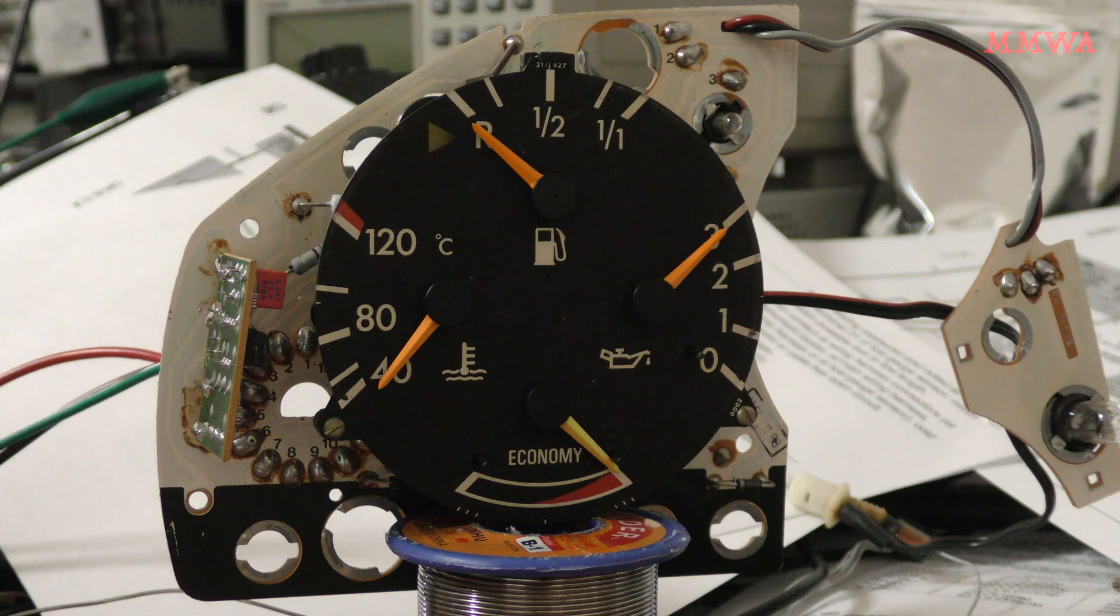an empty fuel tank, or you can take the level sender out and do as MB did, turn it upside down for full and straight way up for empty to calibrate your gauge spot on. Or you can do what I did and just use a resistance decade.